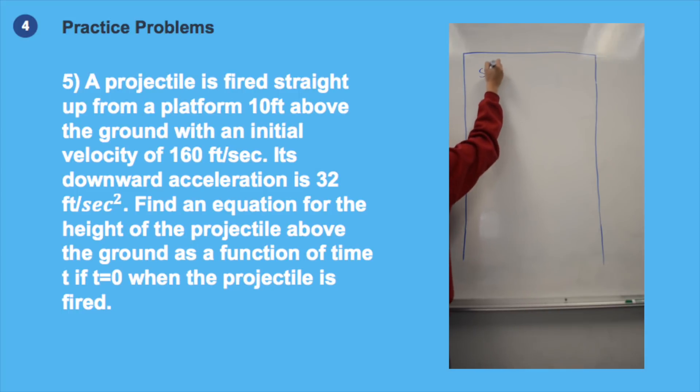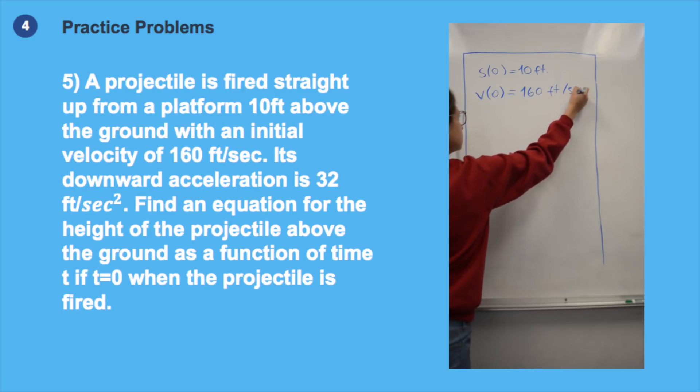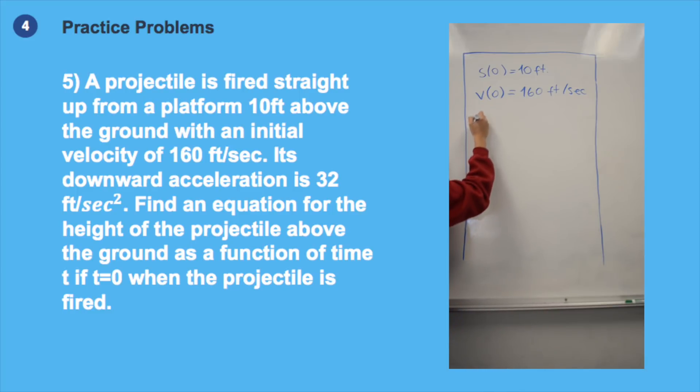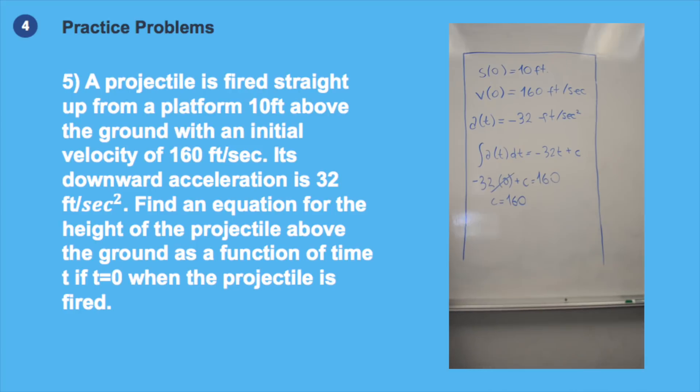We know that the initial position of the object is 10 feet, so s0 could be equal to 10. We know that the initial velocity is equal to 160 feet per second. We also know that acceleration function is minus 32 feet per second squared. When we integrate the function for acceleration, we will get the function for velocity. By using the information given, we can calculate the exact function of velocity. After we repeat the same procedure to find the equation for the position function. So we integrate the velocity function, we use the specific value given to find the plus c, and we have our position function.